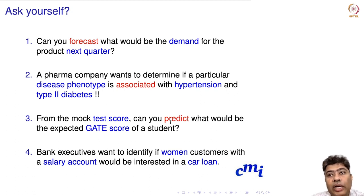You can also use regression or classification models for this. So directly, no, it is not a predictive analytics problem, but what you are interested in is more the association—finding the association between woman customers with salary accounts and whether they would be interested in a car loan or not.